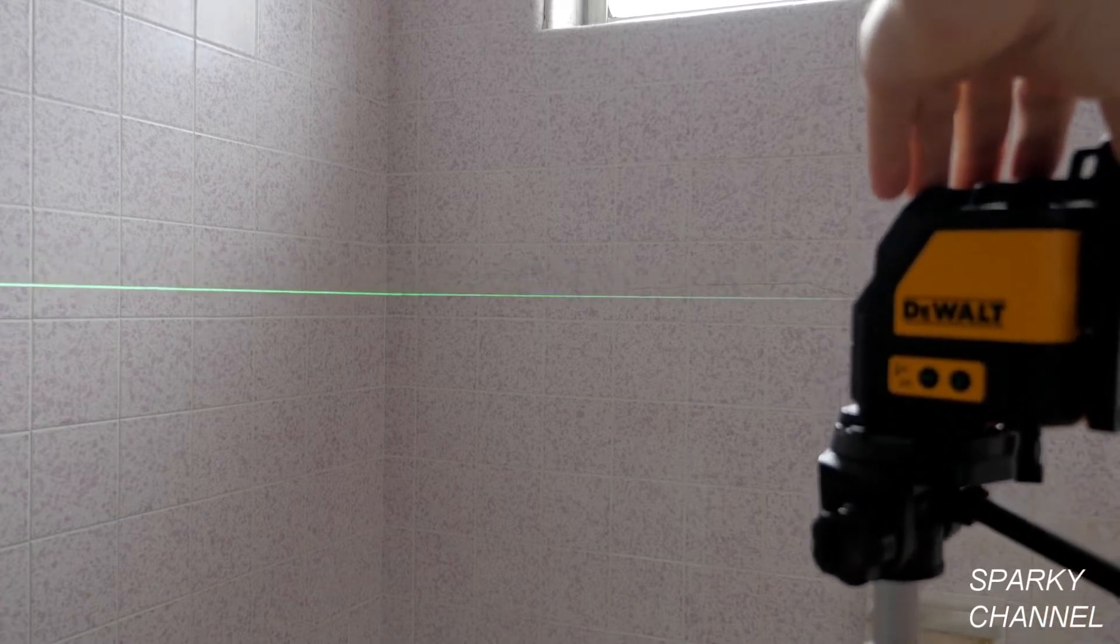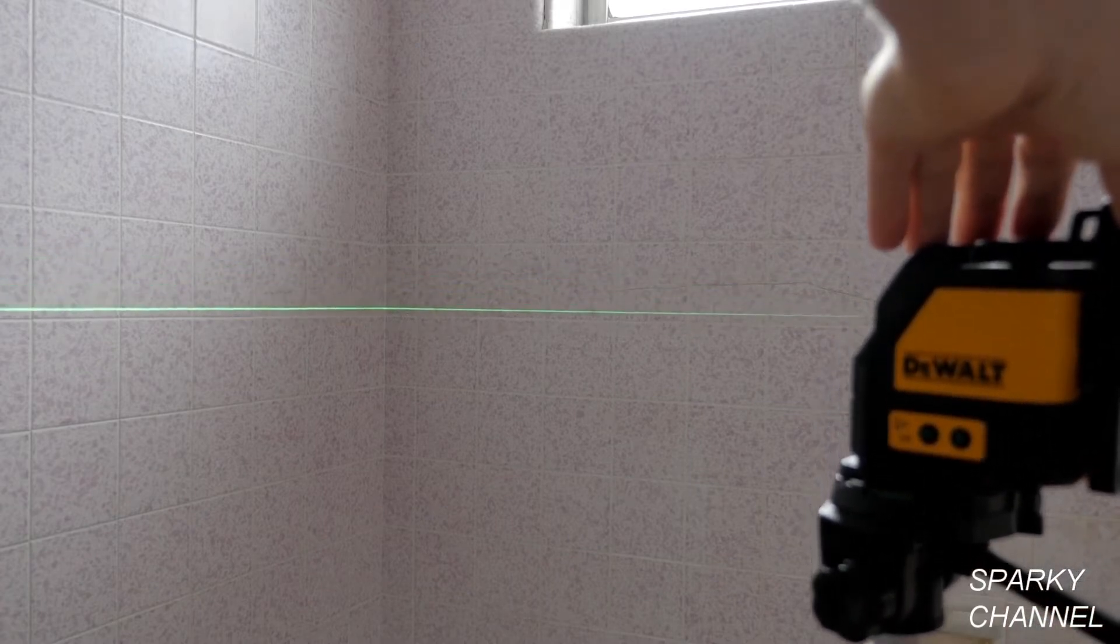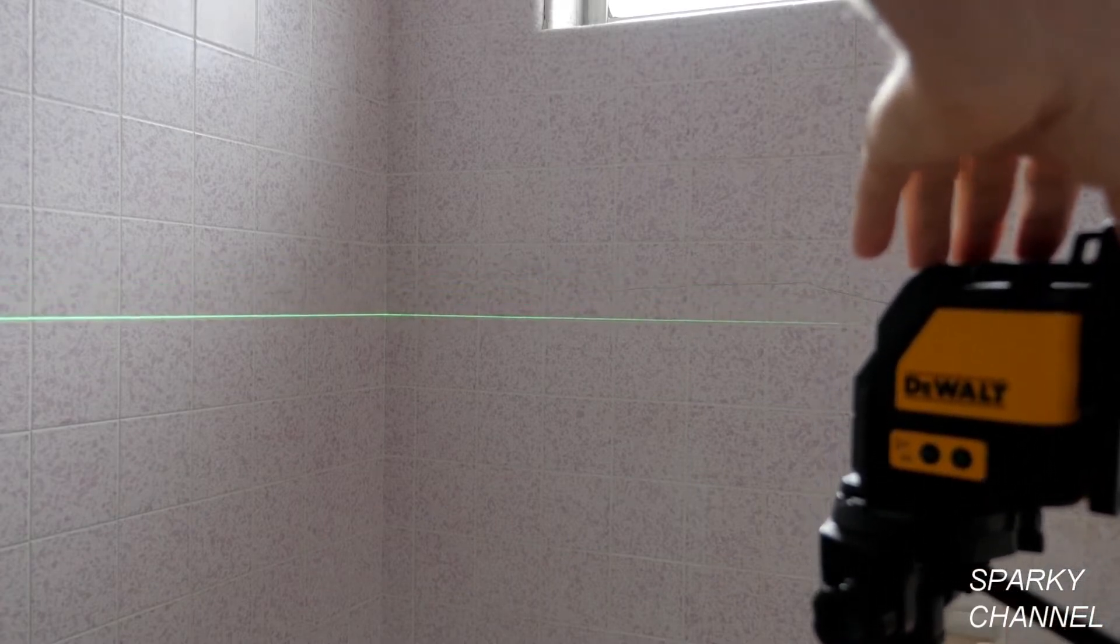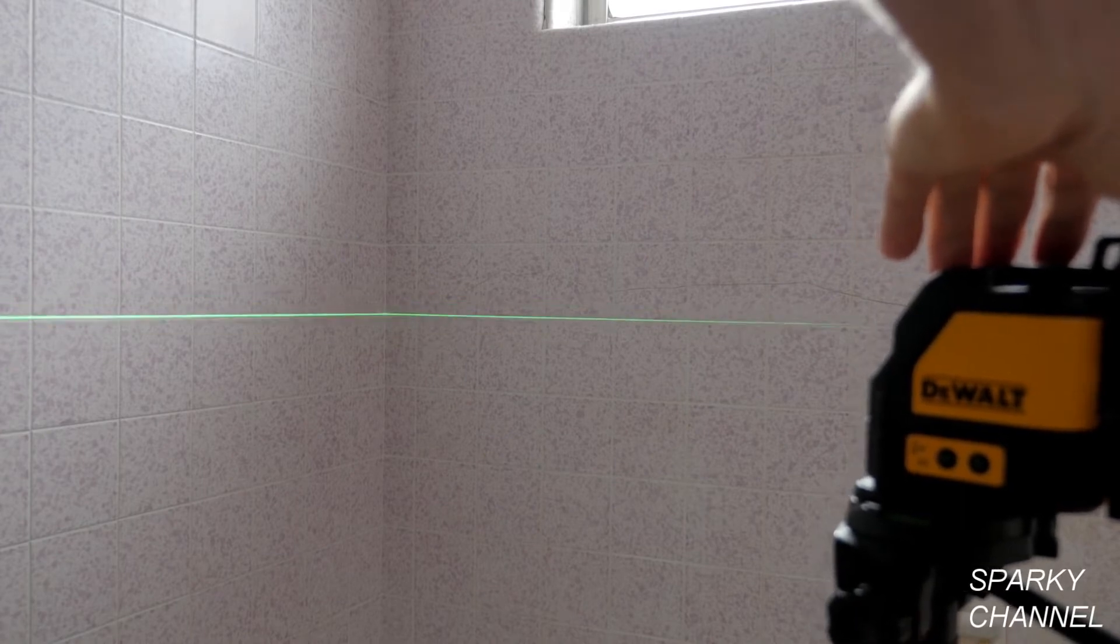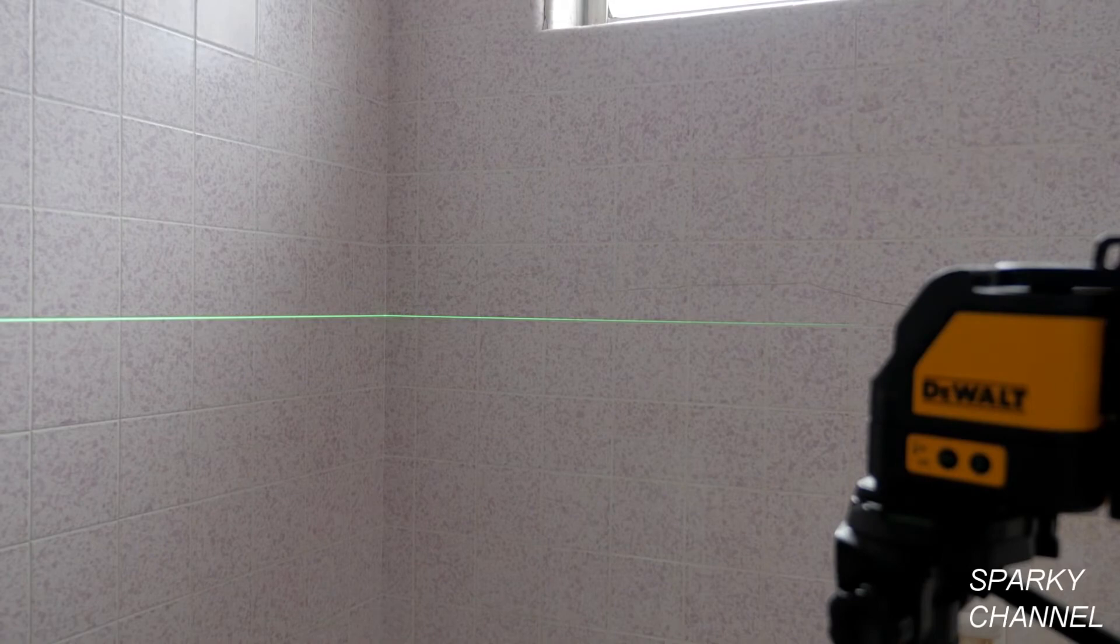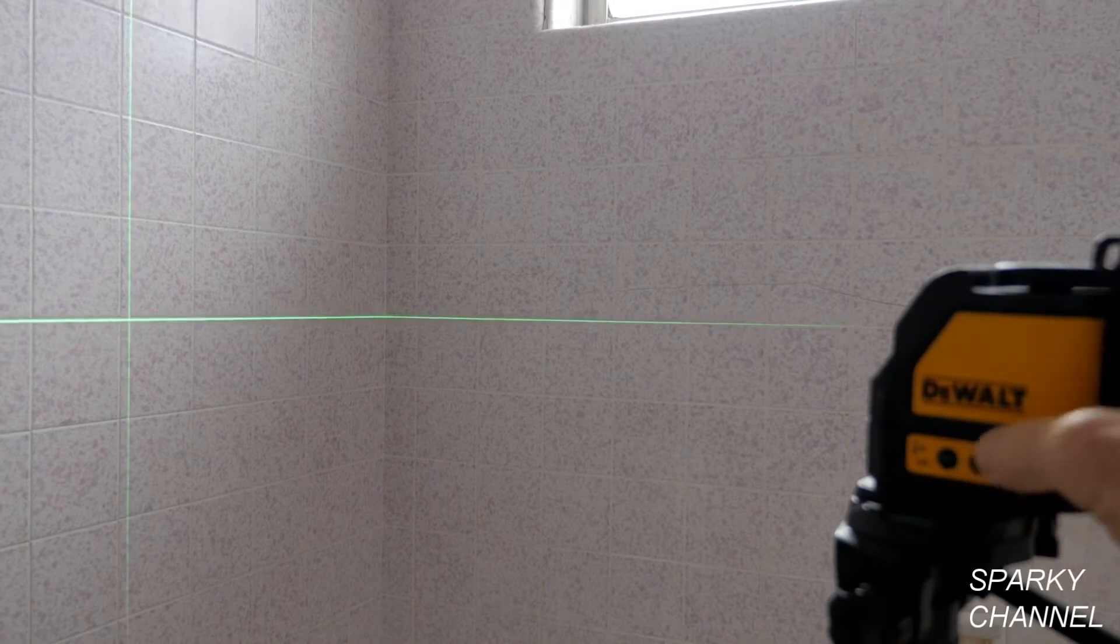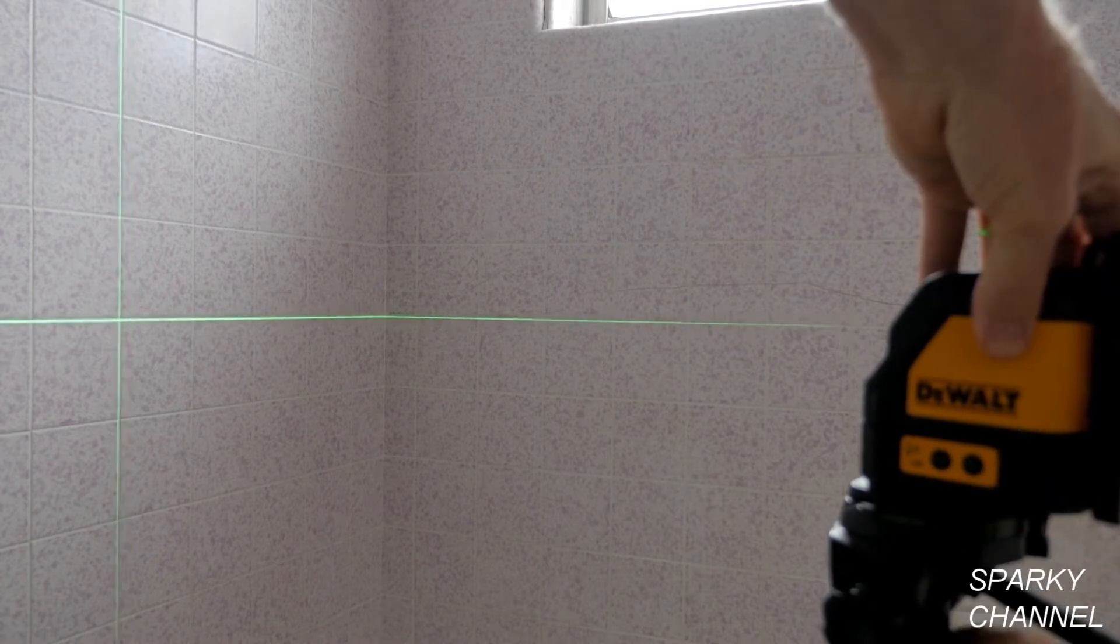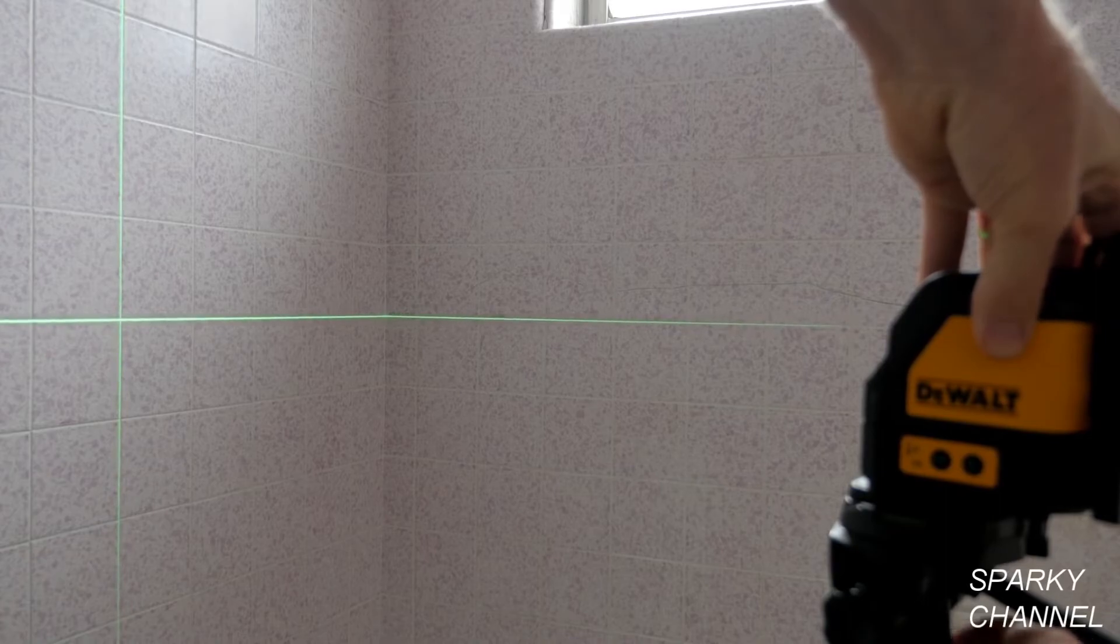One excellent use for this cross line laser is to set tile in a bathroom tub surround. It's particularly well suited for this job because it's relatively small, has several means of attachment, and the green laser is easily visible even with sunlight pouring in through a window.